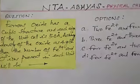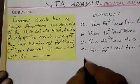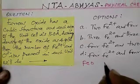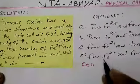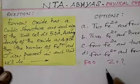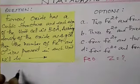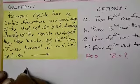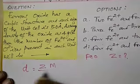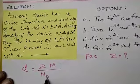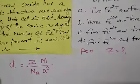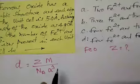Point number one, let us see one by one. The formula for ferrous oxide is important. What they are asking is the number of Fe²⁺ and O²⁻ ions. Now let us go and see the formula. The density formula is: density equals Z times molar mass divided by Avogadro's number into volume A³, where A is the unit cell edge length.